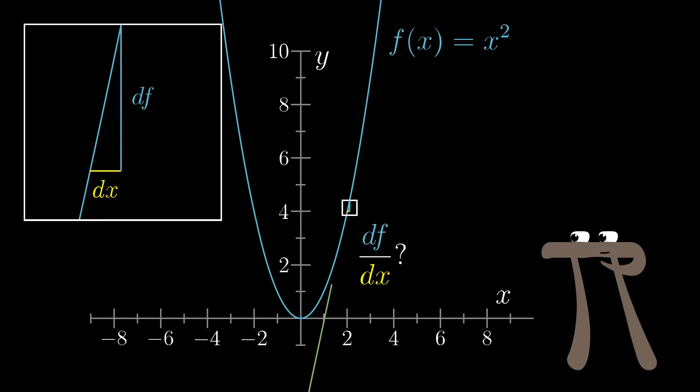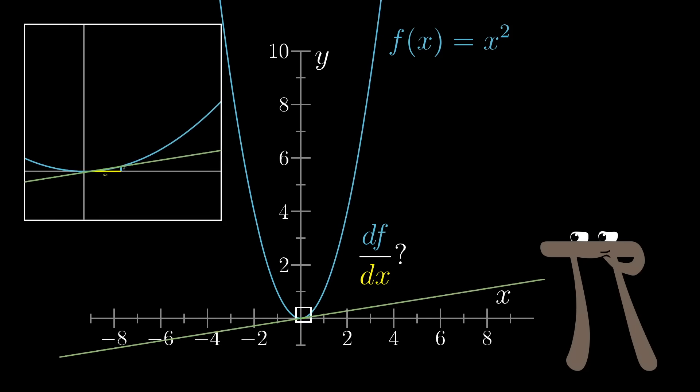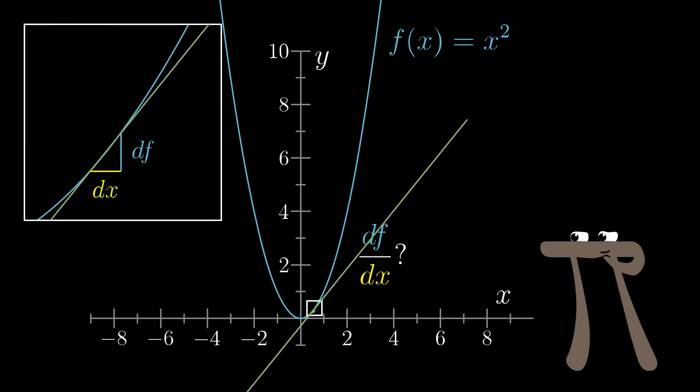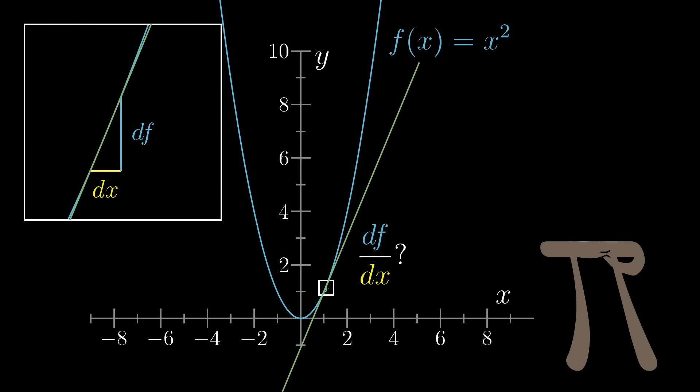As a first step for intuition, we know that you can think of this ratio df dx as the slope of a tangent line to the graph of x squared. And from that, you can see that the slope generally increases as x increases. At 0, the tangent line is flat, and the slope is 0. At x equals 1, it's something a bit steeper. At x equals 2, it's steeper still.